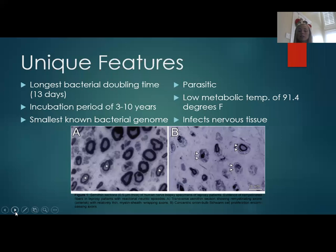The ideal metabolic temperature for M. leprae is 33 degrees Celsius or 91.4 degrees Fahrenheit. That is quite a bit lower than the typical body temperature for humans, causing the hands and feet to be better environments for M. leprae to inhabit.